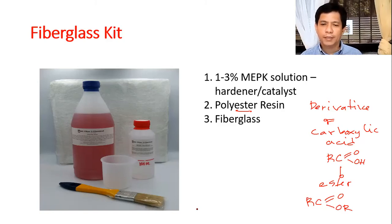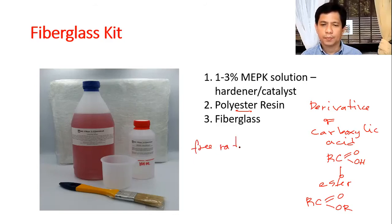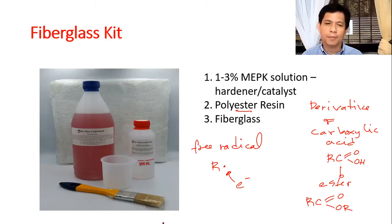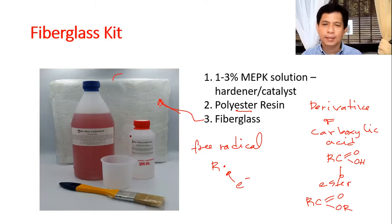Aside from the monomer, you need the source of the free radical. The free radical is usually represented as R with a dot — that dot represents an unpaired electron. And of course, you also have the fiberglass mat itself.